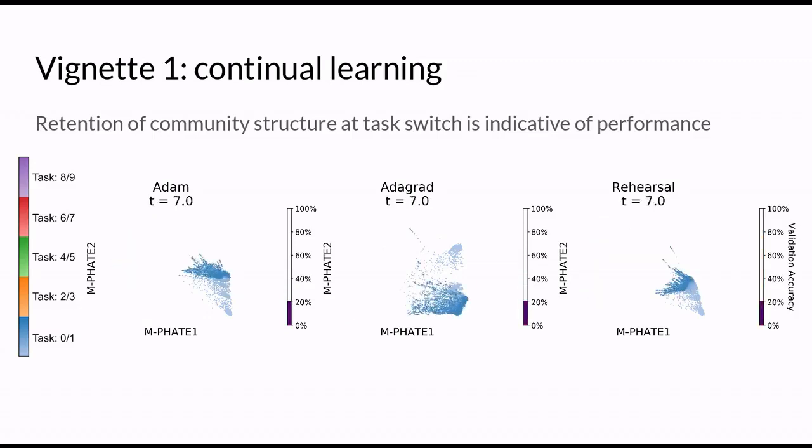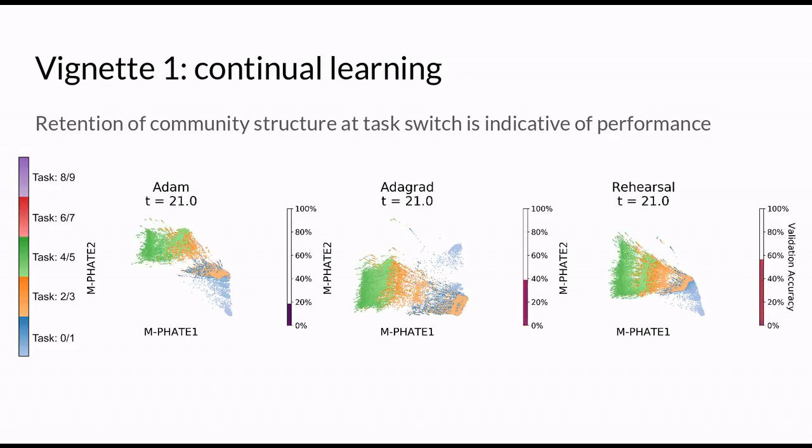This corresponds to a phenomenon known as catastrophic forgetting. In the paper, we quantify this visual effect by clustering on the visualizations, and show that the retention of structure at the task switch is highly correlated with test performance.